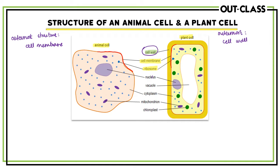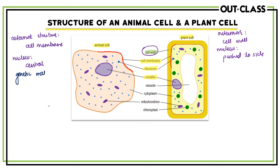Another structure common to both cells is the nucleus — the purple structure visible here. In animal cells the nucleus is central, while in plant cells it is pushed to the side. The nucleus functions like a CEO or boss of the cell: it contains the genetic material and controls all the processes happening in the cell. The control element lies with the nucleus in both animal and plant cells.